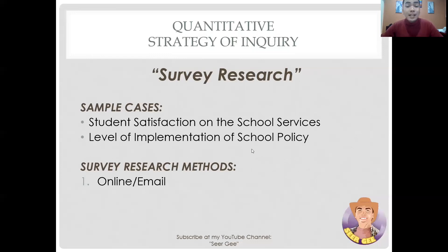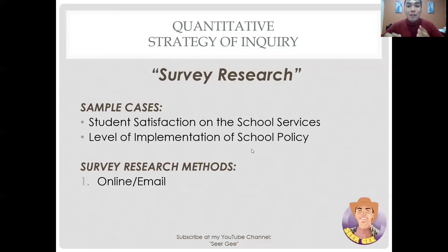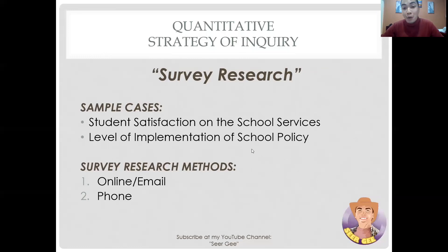The first is online or email survey. Online survey research is one of the most popular methods today; the cost involved is extremely minimal and the responses gathered are highly accurate. The second method is phone survey. Survey research conducted over the telephone can be useful in collecting data from a more extensive section of a target population, though the money and time invested tend to be higher than other mediums.